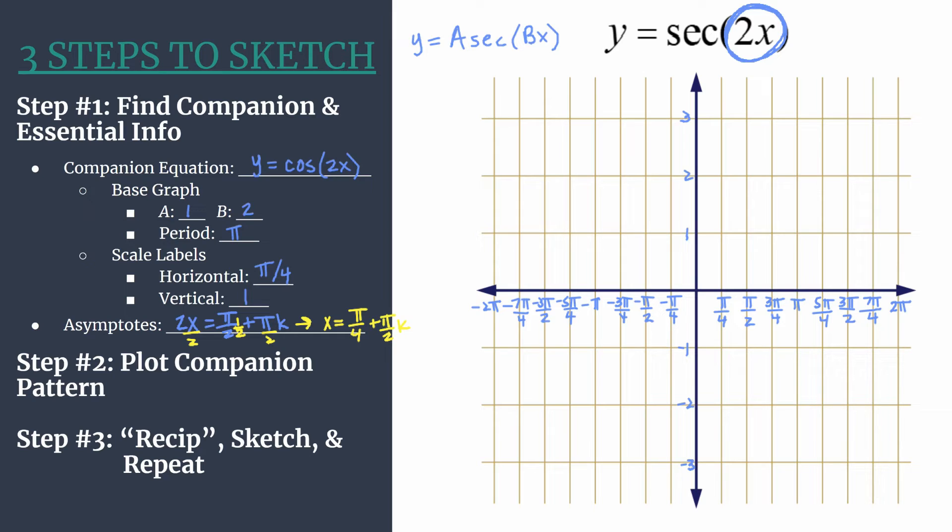Remember that the pattern for cosine is maximum 0, minimum 0, and a 0 is just another name for an x-intercept. And we know that we start on the y-axis. So our maximum is going to happen at 0, 1.